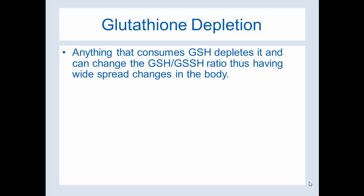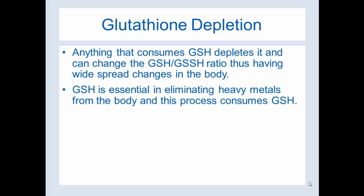Glutathione depletion: anything that consumes glutathione depletes it and can also change that very sensitive GSH-to-GSSG ratio, thus having widespread changes in the body. Glutathione (GSH) is essential in eliminating heavy metals from the body, and this process consumes GSH. So whenever a molecule of heavy metal needs to be eliminated, you're going to use glutathione — that's where the depletion comes from.